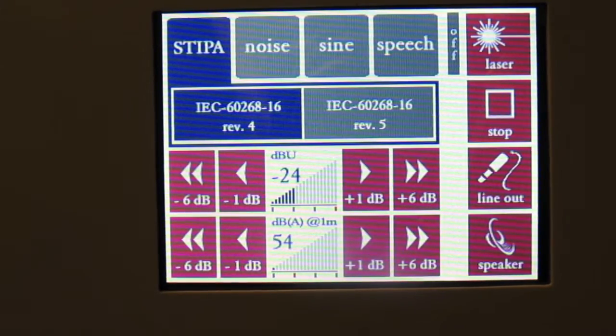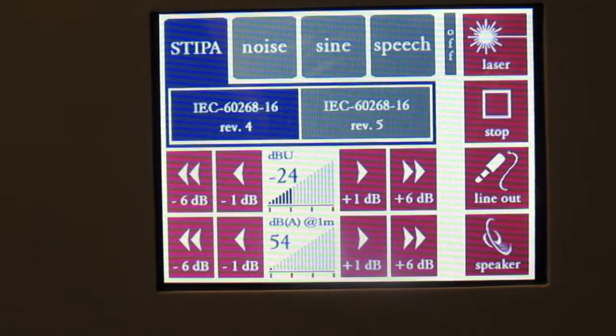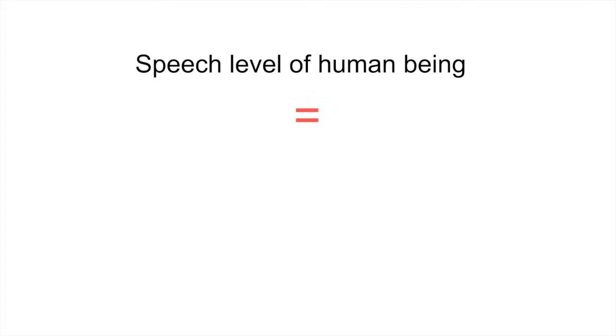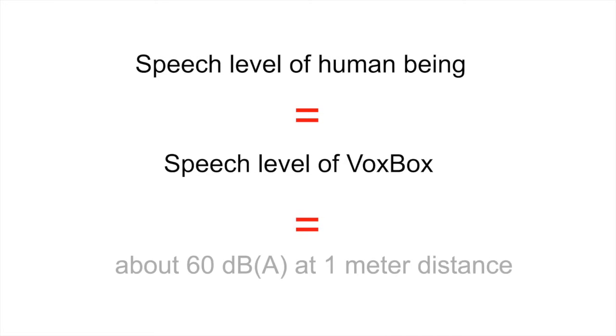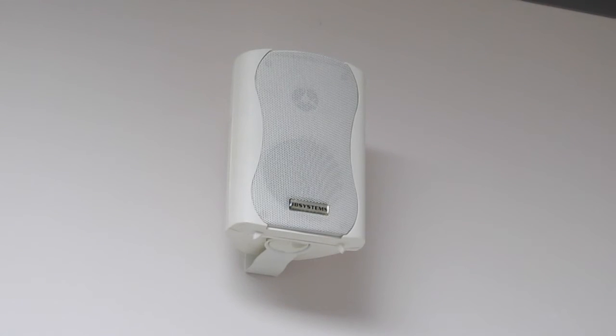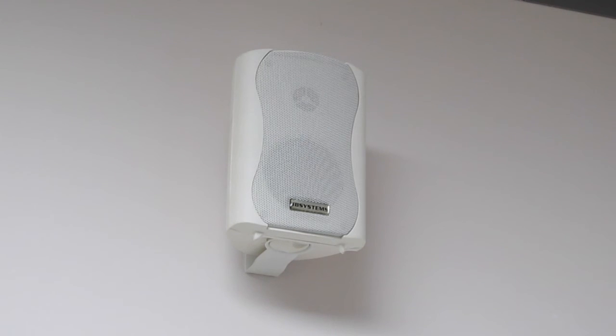Simply adjust the speech level to the value indicated by the standards that apply to your systems. If you're not sure, the default value of 60 decibels is the most common setting. Simply press play and let the signal play continuously.